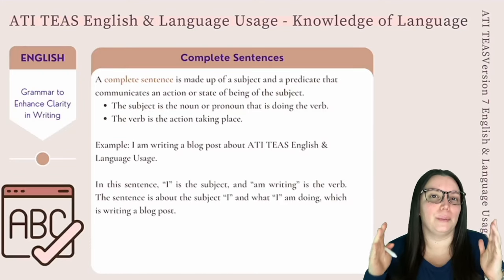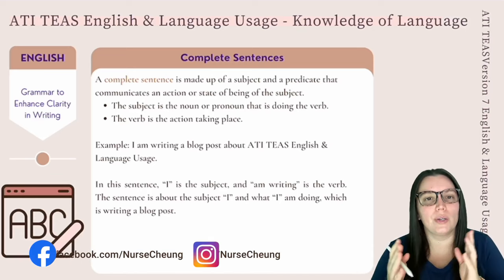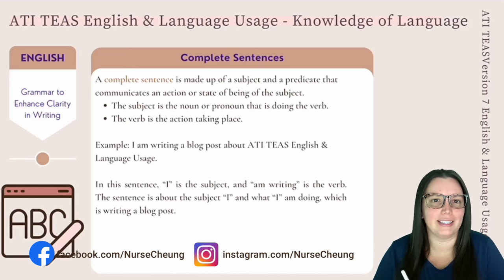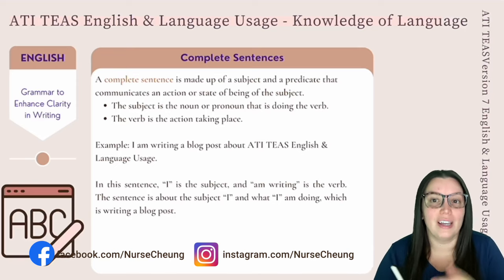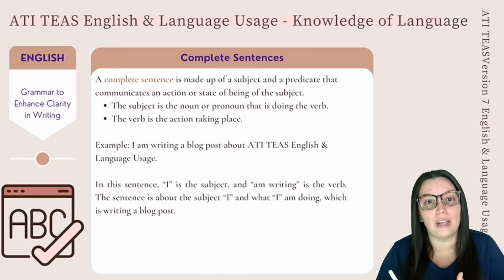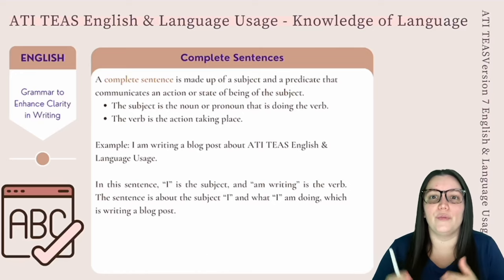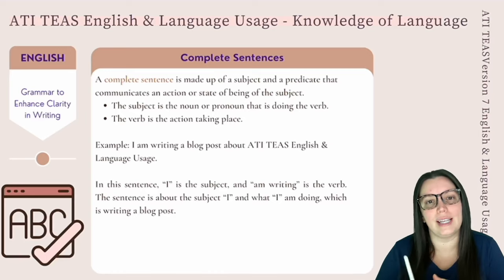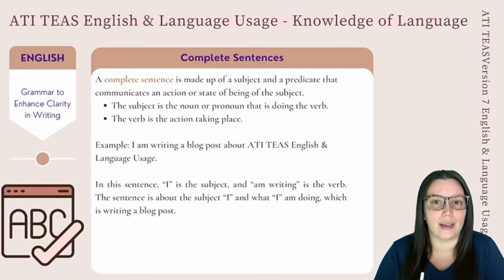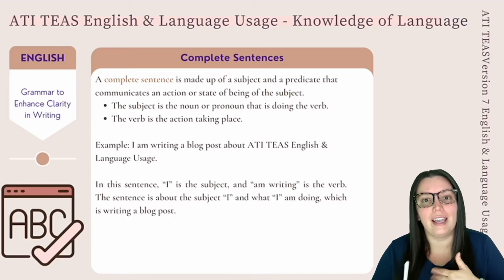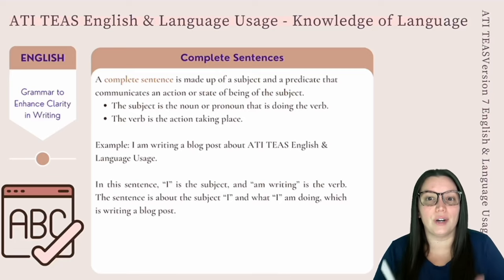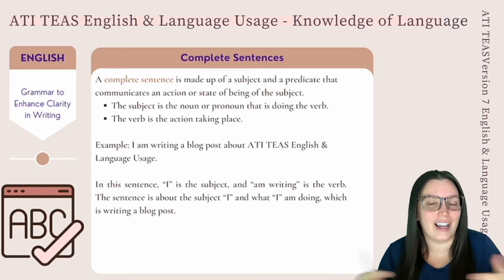We begin by looking at complete sentences. A complete sentence is made up of a subject and a predicate that communicates action or a state of being for the subject. The subject is typically the noun or the pronoun that is doing the verb, and the verb is the action that is actually taking place. For example, I am writing a blog about ATI TEAS English and language usage. In that sentence, I am the subject and I'm writing is the verb. The sentence is about the subject I — and what am I doing? I'm writing a blog.